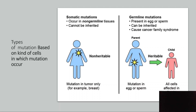Those mutations that take place in the germ cells are known as germ line mutations. That is, mutations that take place in the ovary or in the sperm — in the testes — are known as germ cell mutations.